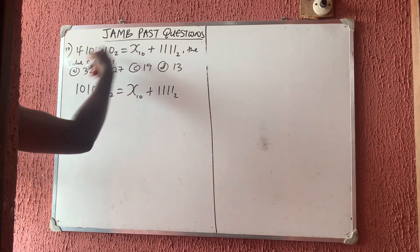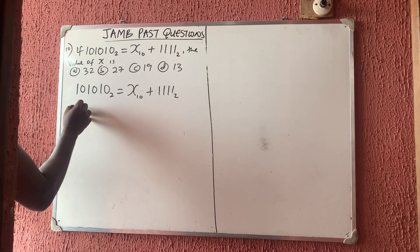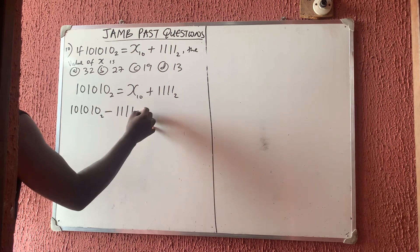Now this one has to come here so that X will stay alone. So this one coming here means 101010 minus 1111, all in base 2, is equal to X in base 10.